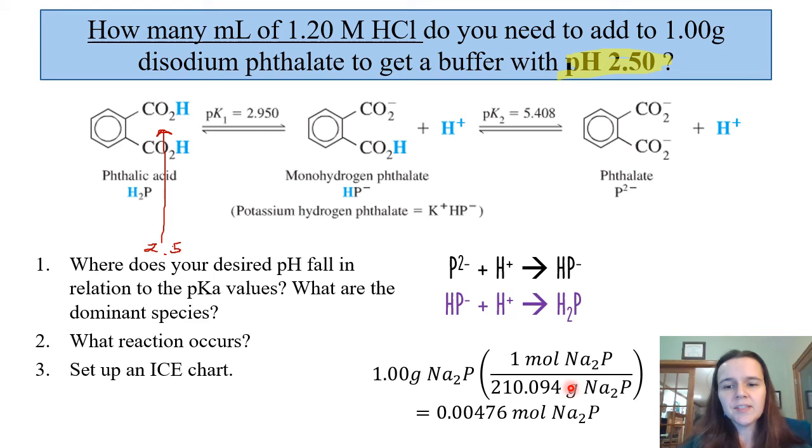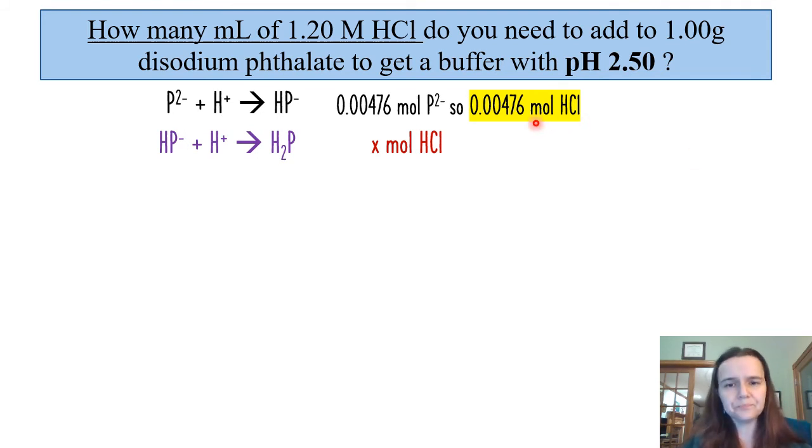We will set up an ICE chart, same mass of the same compound. That's how we get the 0.00476 as our starting moles of Na2P. And we are heading towards the Henderson-Hasselbalch equation, where this is the pKa value. That's the acid on the bottom of the log term, and this is the base, conjugate base to that acid, that will be on the top of the log term. With respect to these two reactions, we have the first step where we want all 0.00476 moles of P2- to be completely converted to HP-. So we know it's going to take 0.00476, or the exact same number of moles of HCl to get there. So this is a two-step process, and that's step one.